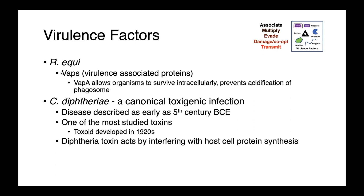Corynebacterium diphtheriae is a canonical toxigenic infection. The toxin produced by this organism interferes with host protein synthesis, and that's the mechanism by which it causes disease — diphtheria, which has been described as early as the 5th century BCE. Diphtheria toxin is one of the most well-studied bacterial toxins. The toxoid vaccine was developed in the 1920s and has been very successful.